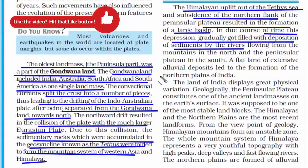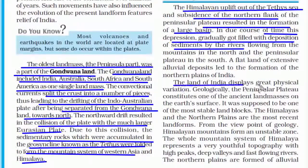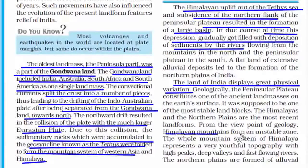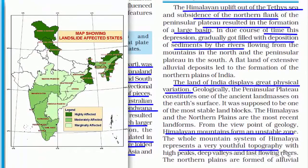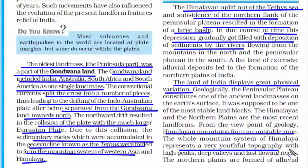This depression over time got filled with the deposition of sediments brought down by rivers flowing from the mountains in the north — which is why the Ganga and Brahmaputra drain in that region. The Himalayas and the northern plains are the most recent landforms, and hence are also a very high-risk zone for earthquakes because the land is not stable, unlike the peninsular region which is a complete land block that broke from the Gondwana land.